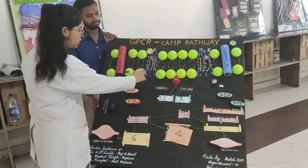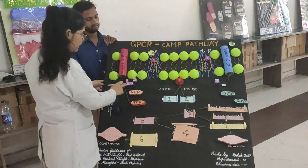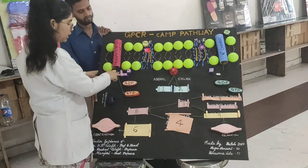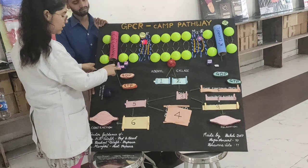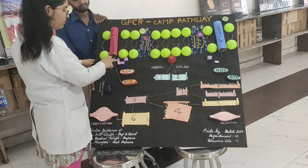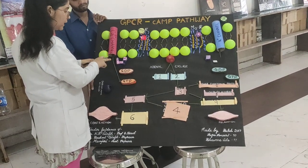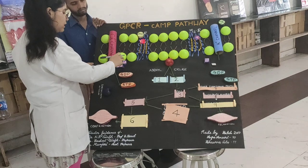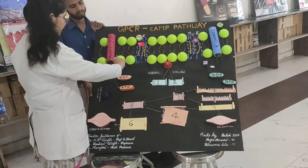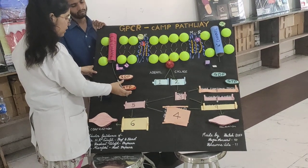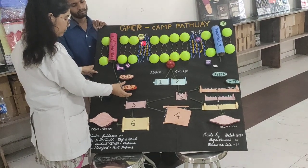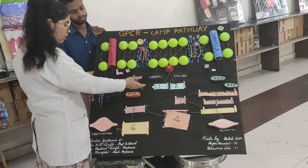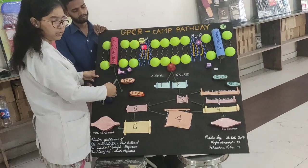And due to this, it activates the G-stimulatory subunit, in which there are three subunits: alpha, beta, and gamma. Now this alpha subunit is detached, and the GDP is exchanged in place of GTP.